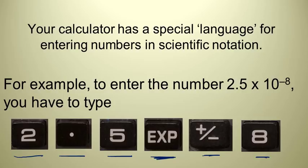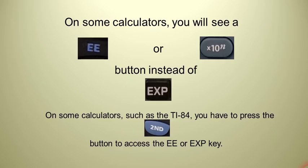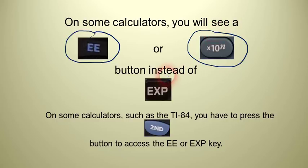Now, you might be looking at your calculator and not be able to find an EXP button. And that's because on some calculators, you're going to find maybe an EE button instead. Or on some calculators, you'll have a times 10 to the N button. Either of these three keys are the buttons that are specifically designed for scientific notation. You need to use those buttons on your calculator.